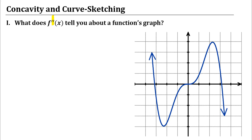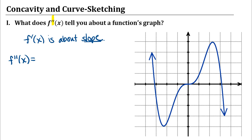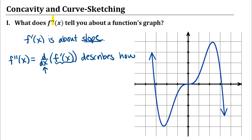We have been talking, since we first started talking about derivatives, that a derivative — the first derivative of a function — is about slope. So in thinking about what the second derivative is about, we can think about that as the derivative of f prime of x. It's describing something about slope, but it's describing how slope changes.